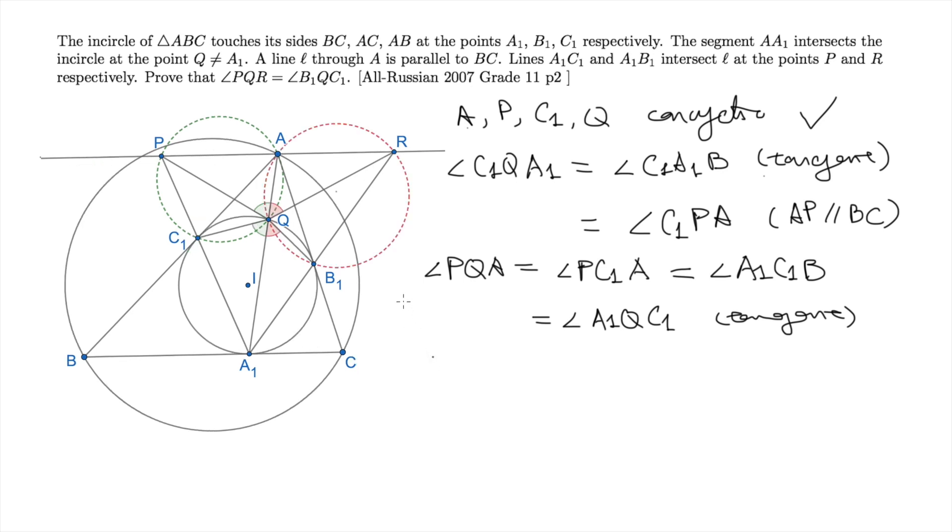So far, we have been focusing on the left-hand side of the diagram. If now we look at the right-hand side, we can prove that A, R, B1 and Q are concyclic by a similar argument. And moreover, the angle AQR, this red angle, equals to the angle B1QA1. Then we are done because the angle PQR is the sum of the green and the red angle, and so is the angle B1QC1.